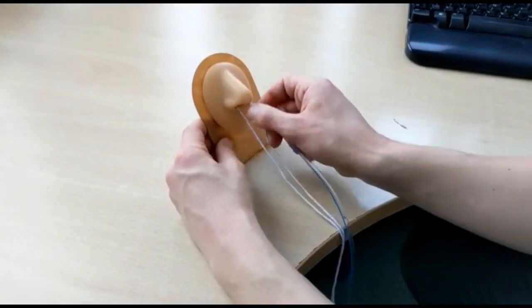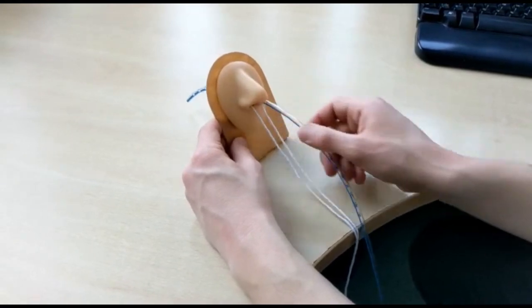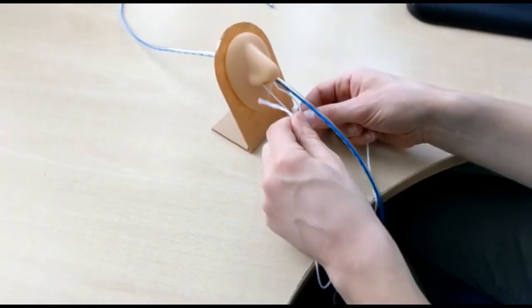Now you can insert the NG tube. It's easier to insert the bridle before the NG tube as the NG tube can be obstructive to bridling.